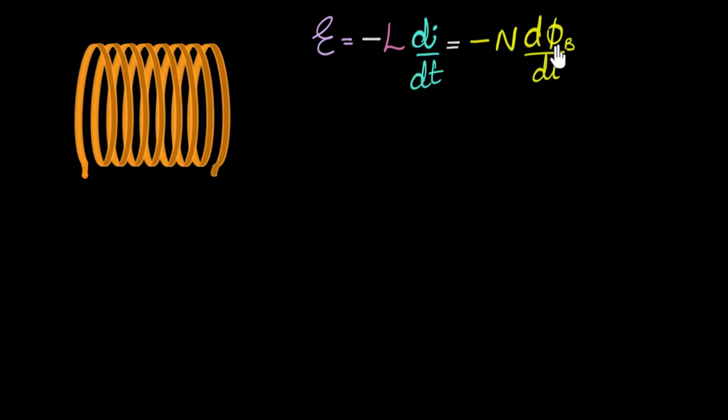So to calculate inductance, what we can do is we can look at these two and we can say they're equal, they have to be equal, which means that L times I should equal N times φ_B. So let's write that. So N times φ_B should equal L times I.